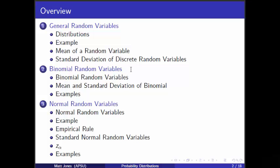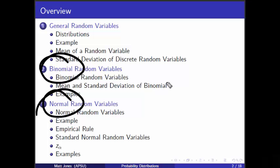The continuous case gets a little more complicated and actually requires calculus, so we won't carry that out exactly, but we will talk about means for continuous random variables to some degree. Then we'll focus on two random variables in particular, namely the binomial random variable and the normal random variable. There are many, many other kinds of random variables, but these are just two of thousands that arise very naturally in natural and industrial settings.